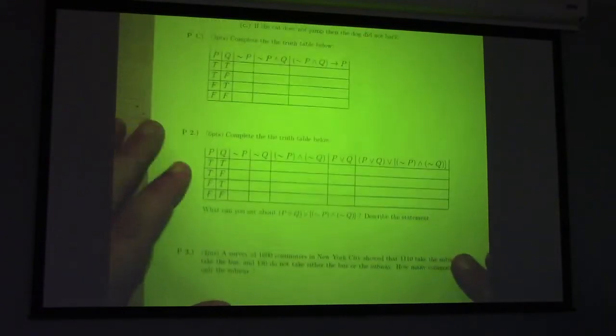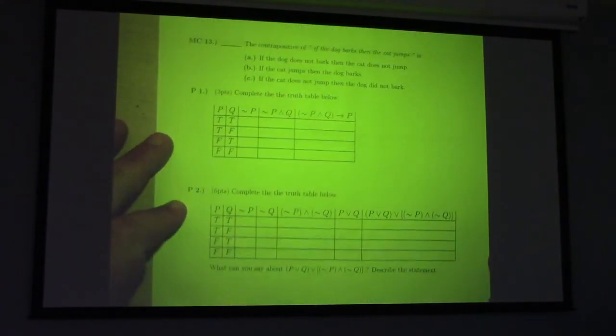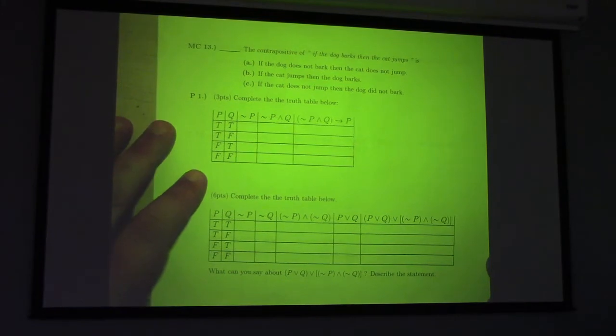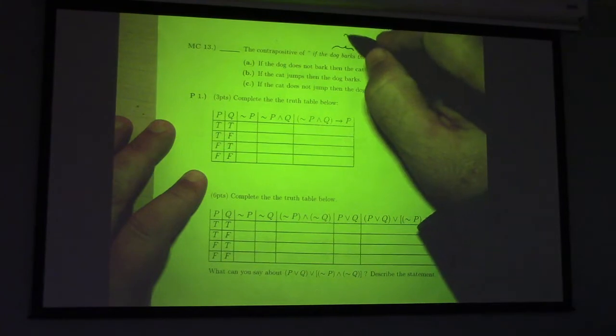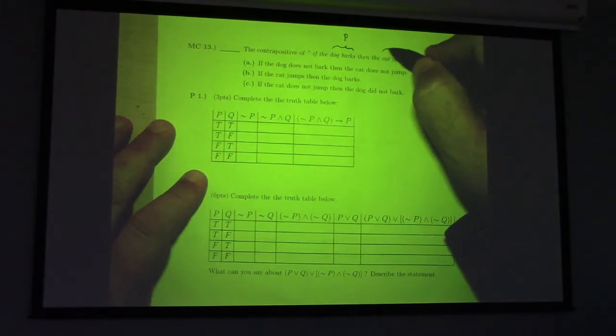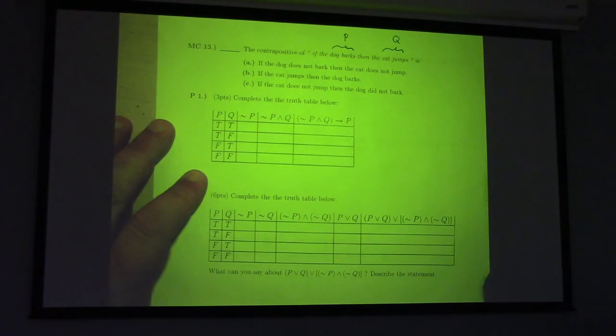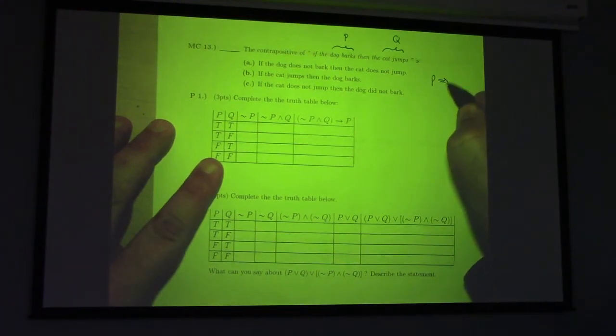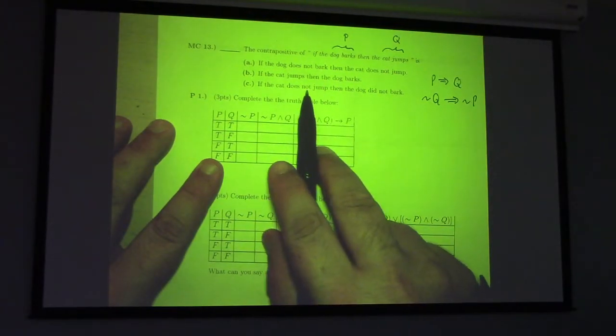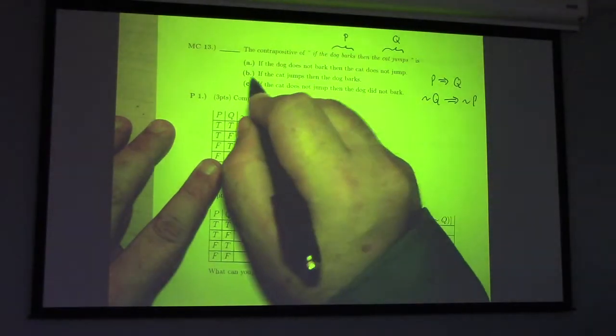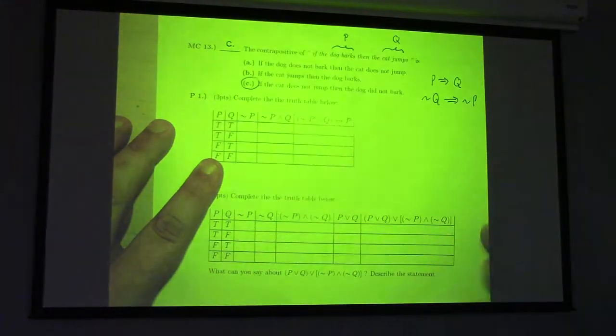Here we go. So, the contrapositive of, so here's what I do for this, guys. If this is P, and this is Q, right? So, P implies Q is the given conditional. What's the contrapositive of that? The contrapositive is not Q implies not P. So, not Q is the cat does not jump. Not P is the dog does not bark. The answer is C.